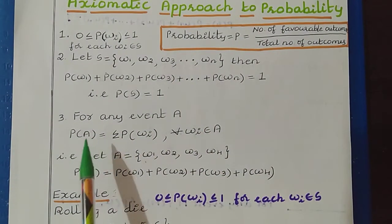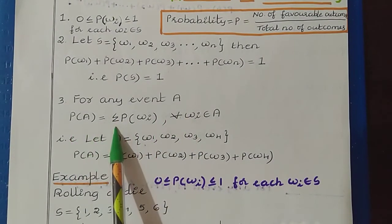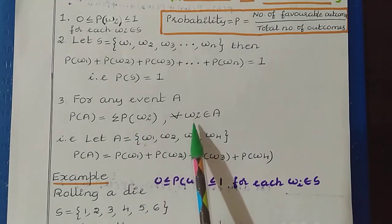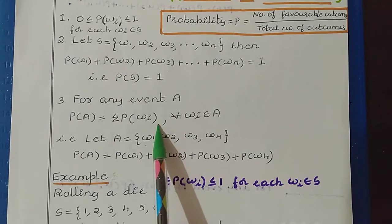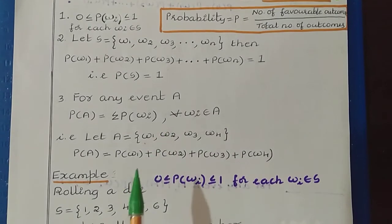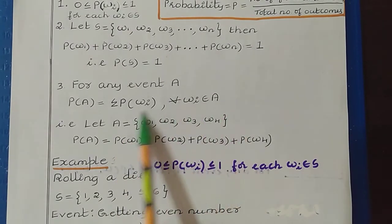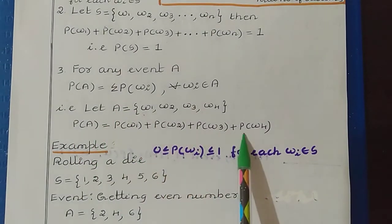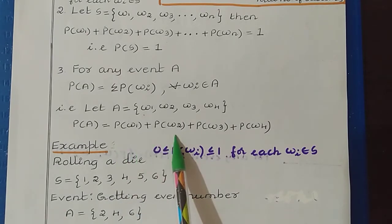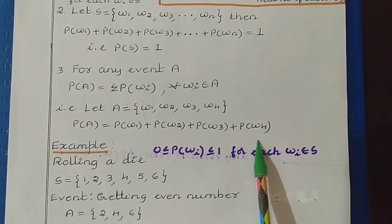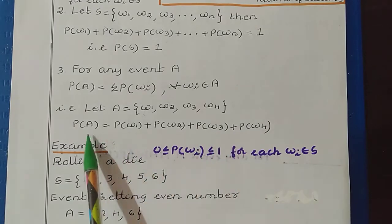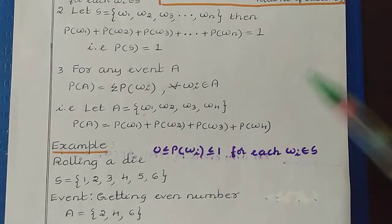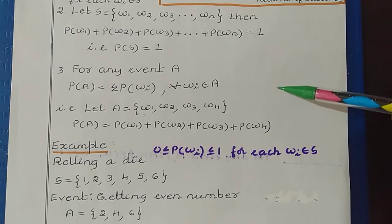Then we have the third rule. For any event A, P(A) = Σ P(ωi) for all ωi belonging to A. This rule is related to the event. Let us say we have an event A with four outcomes. To define the probability of this event, we can add the probability of the outcomes of this event. That is, P(A) = P(ω1) + P(ω2) + P(ω3) + P(ω4). By this way we can find the probability of the event by adding the probability value of the outcomes. These are the three rules we follow while solving probability problems.